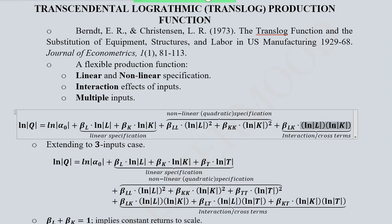Finally, the third visible part of this production function is the product of the two natural logs of the inputs. This is known as the cross term or interaction term because it considers the combination of the two inputs when they coexist in the process of production. The individual terms consider the effect of one input at a time, assuming ceteris paribus, but in the interaction term both inputs are used together and their combined effect on output is measured.